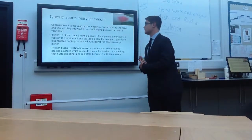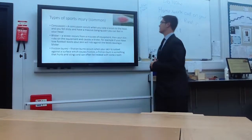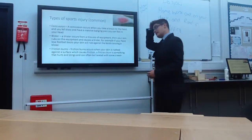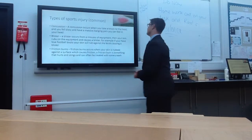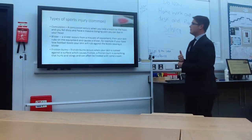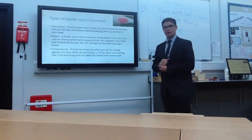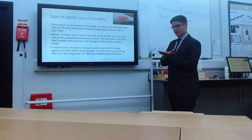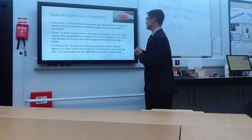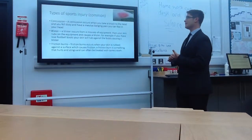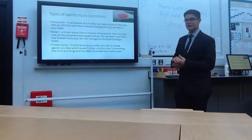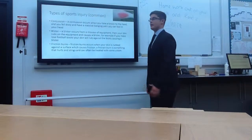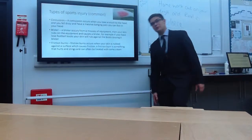Another type of sports injury is a concussion. A concussion occurs when you take a knock to the head; you start to feel dizzy and get a really bad banging in your head. A blister occurs from a misuse of equipment — your skin rubs on the equipment and causes a blister. For example, if you have loose football boots, your skin will rub along the boots when you're kicking and running, which will cause a blister and internal bleeding.